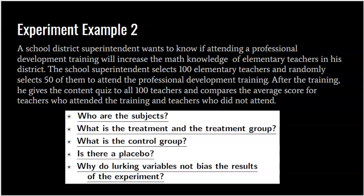Let's look at one more example. A school district superintendent wants to know if attending a professional development training will increase the math knowledge of elementary teachers in his district. His population of interest is elementary teachers in his district. The explanatory variable is professional development and the response variable is math knowledge. He selects 100 elementary teachers, randomly selects 50 to attend the professional development, and the other 50 do not. After the training, he gives a content quiz to all 100 and compares average scores.